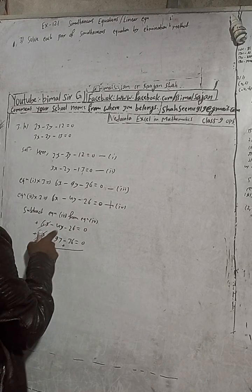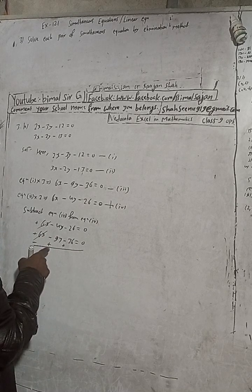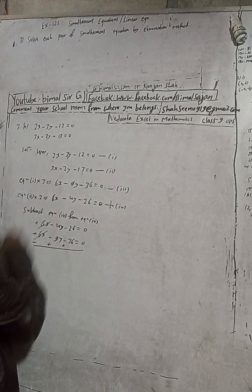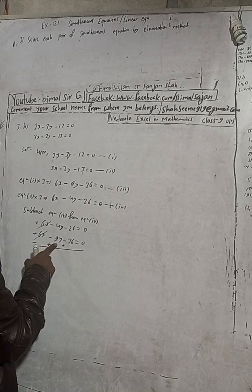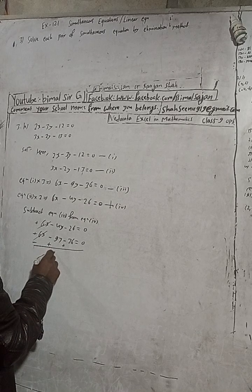So minus 4y and plus 9y will be how much? This gives us 5y.